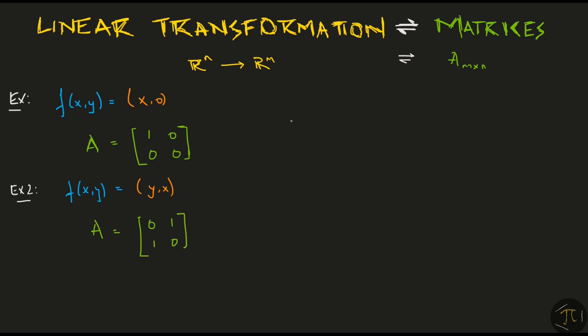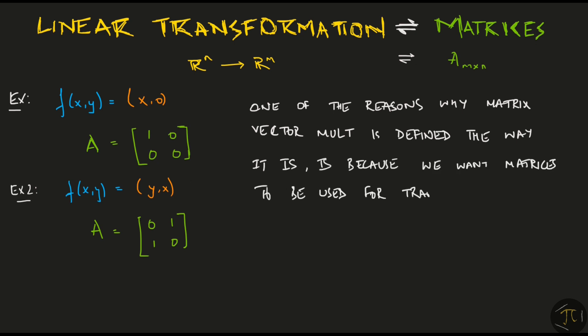We will learn how to find these matrices in a bit, but the point I want to make right now is that one of the reasons why matrix vector multiplication is defined the way it is, is because we want matrices to be used for transformations.